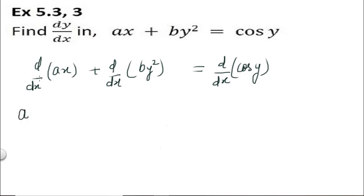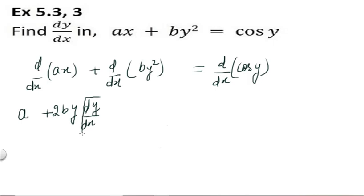d/dx of ax — 'a' being a constant will remain as is, and d/dx of x will be 1. Then 'b' will be taken out, d/dx of y² will be 2y, and then you will apply d/dx of y. Most students forget to write this — they do d/dx of y² as 2y but don't write dy/dx. You have to apply the chain rule for y as well.